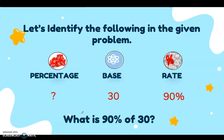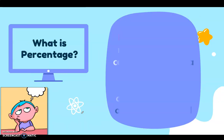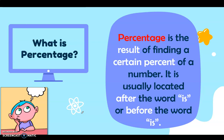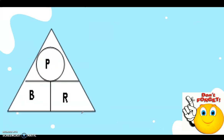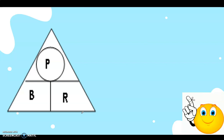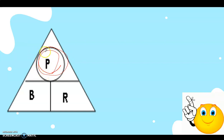How do we find the percentage for this problem? When you say percentage, it is the result of finding a certain percent of a number. With this given triangle, what you're going to do is derive a formula to find the percentage. If P is missing, or the percentage is missing, then you hide P. It leaves B and R, and you multiply B and R.